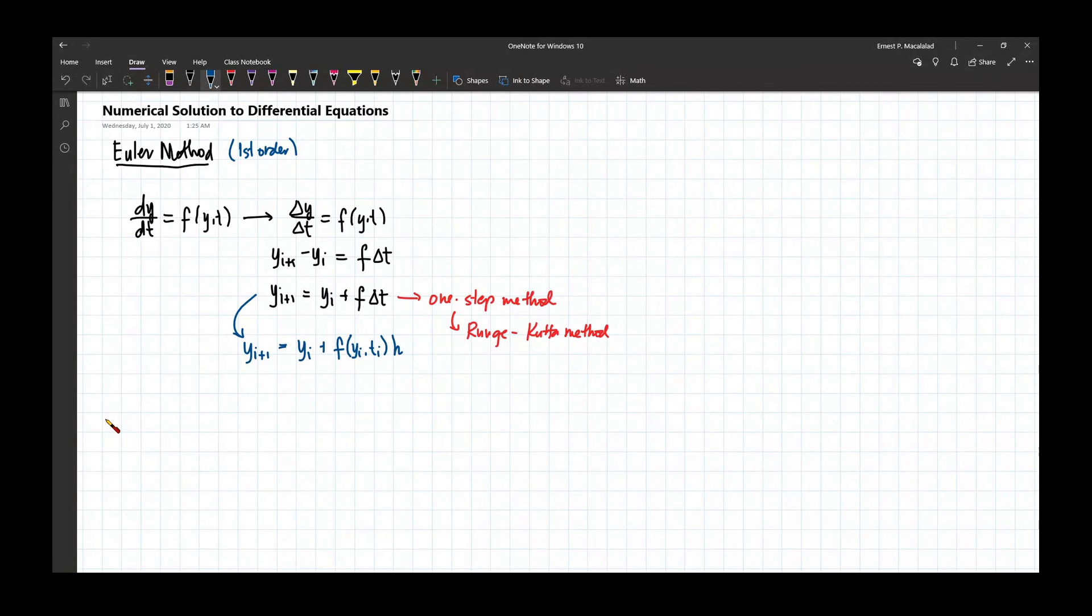So let's use the Euler method to integrate y prime, and this is equal to 4e to the 0.8t minus 0.5y. So in this case, this is your f function of y and t.